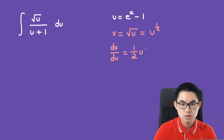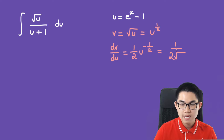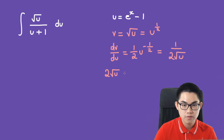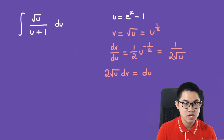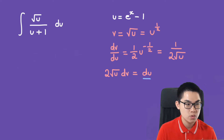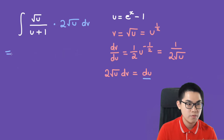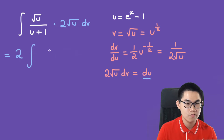Differentiating, dv over du equals 1 over 2 times u to the power of negative 1 over 2, which is 1 over 2 times the square root of u. So 2 times the square root of u dv equals du. Substituting, we get 2 times the square root of u times the square root of u over u plus 1 dv.